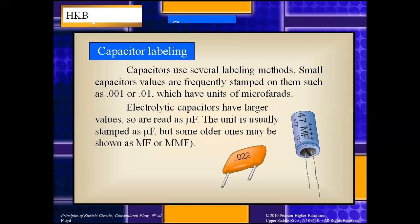Next is the labeling of capacitors — how to identify and determine the value of a particular capacitor from numbers stamped on it. Small capacitor values are frequently stamped as 0.001 or 0.01, which are in units of microfarads. Whenever such a stamping is found, the unit is always microfarad.